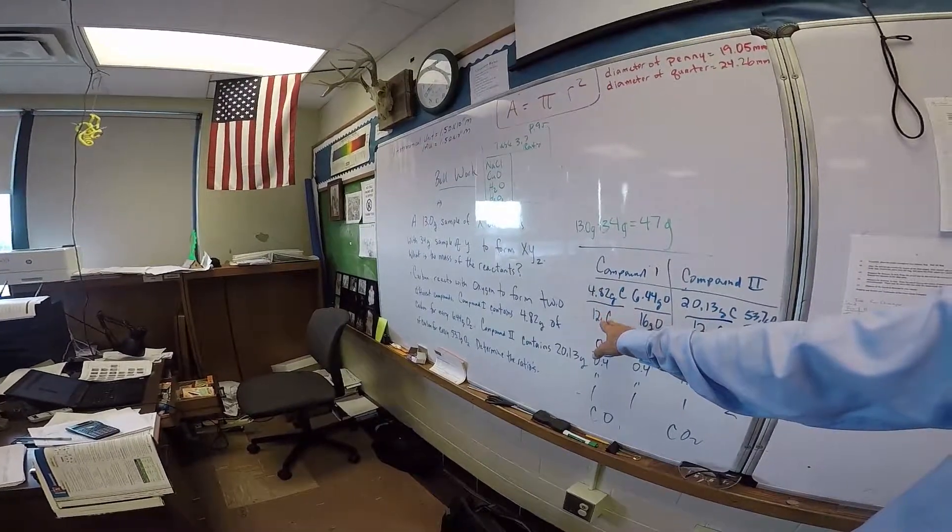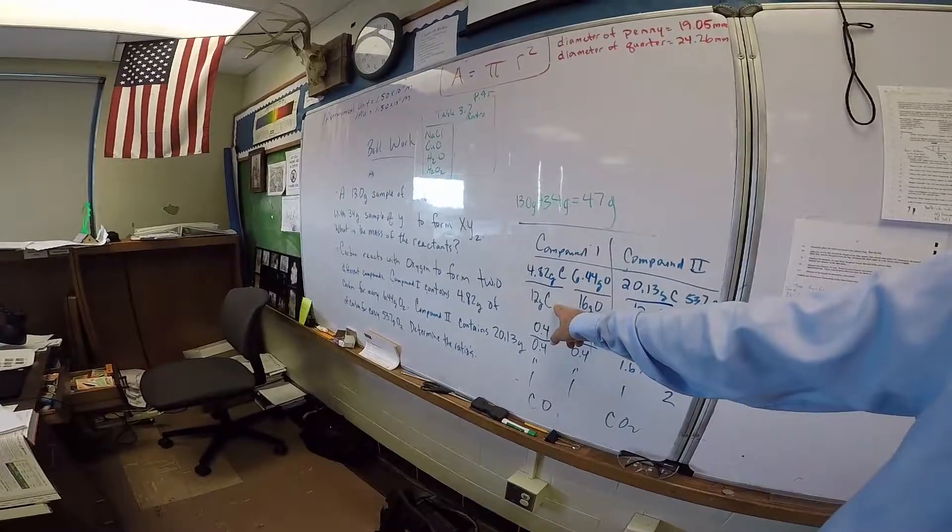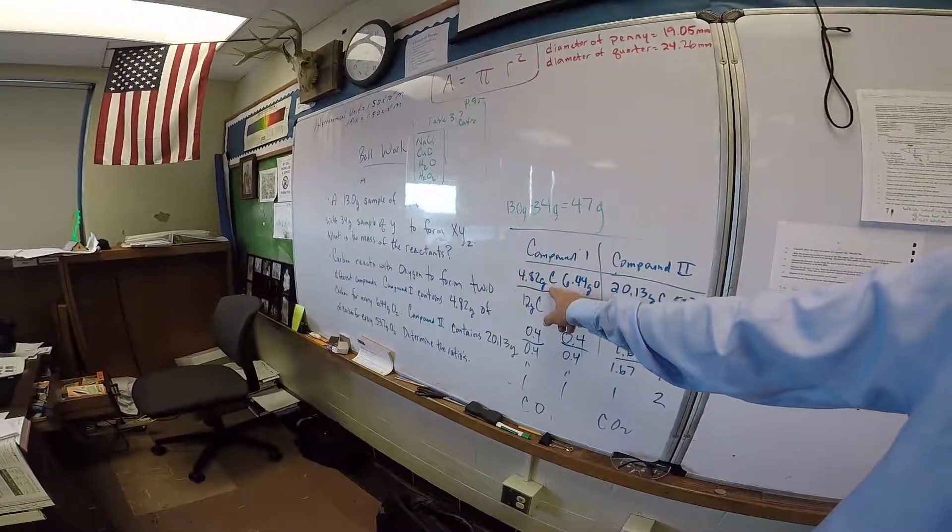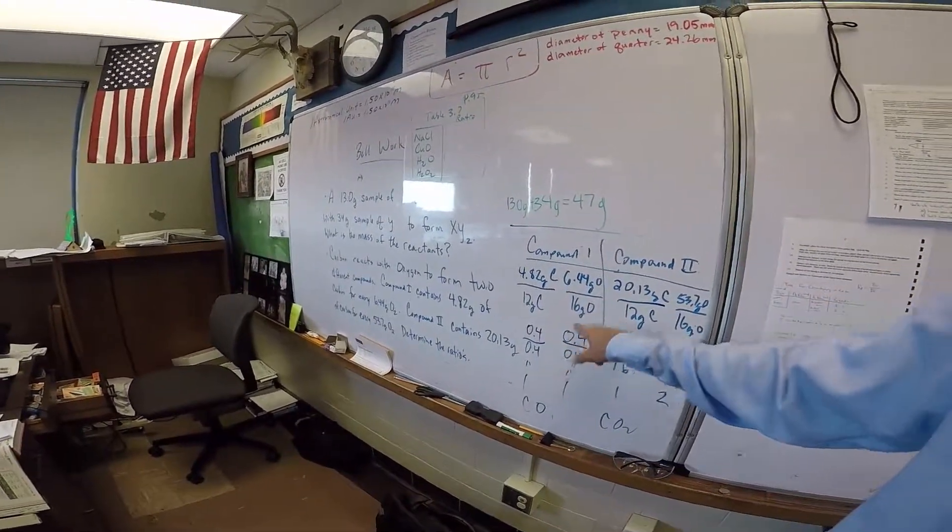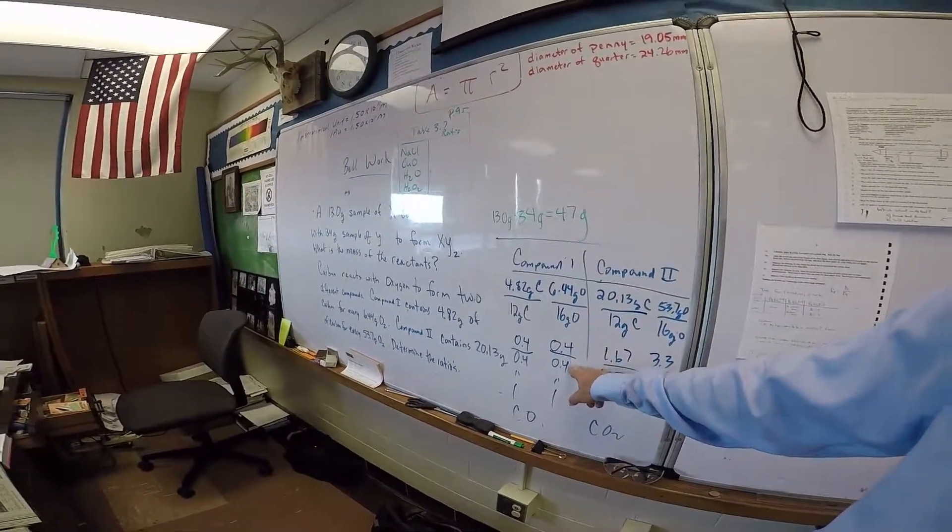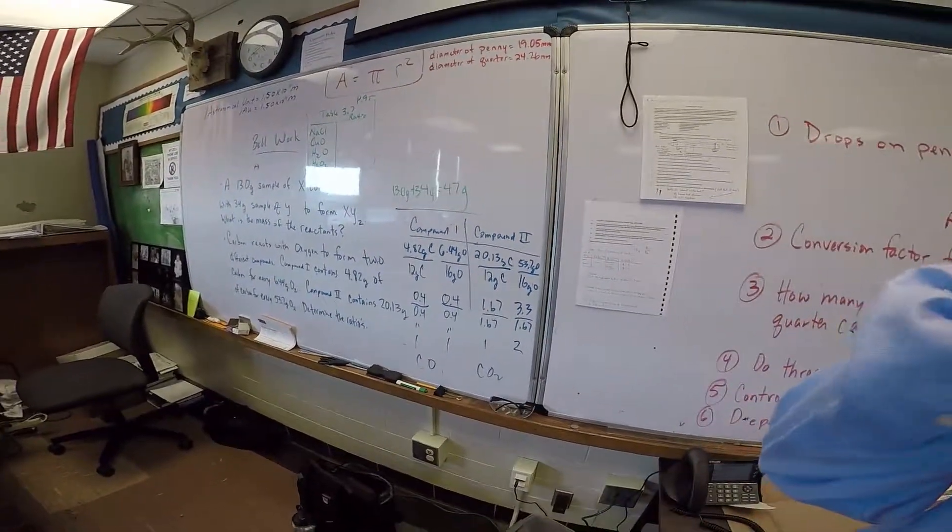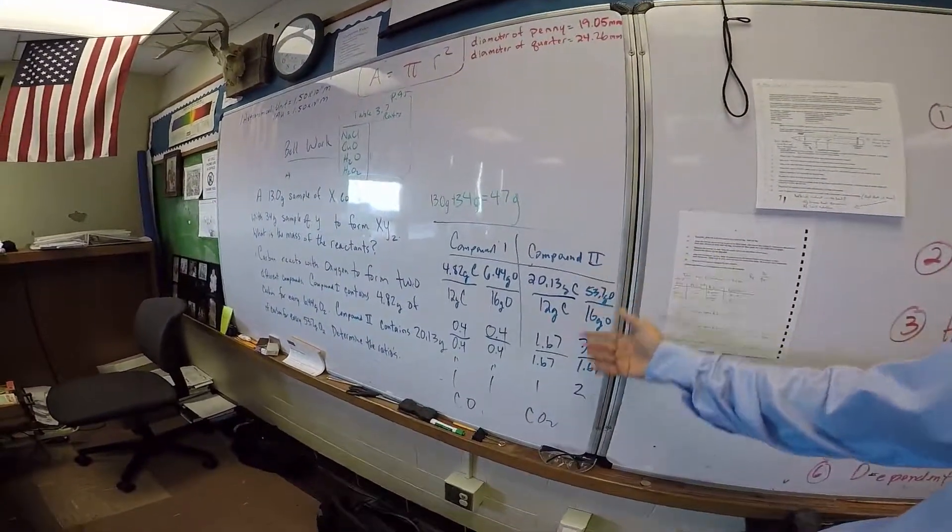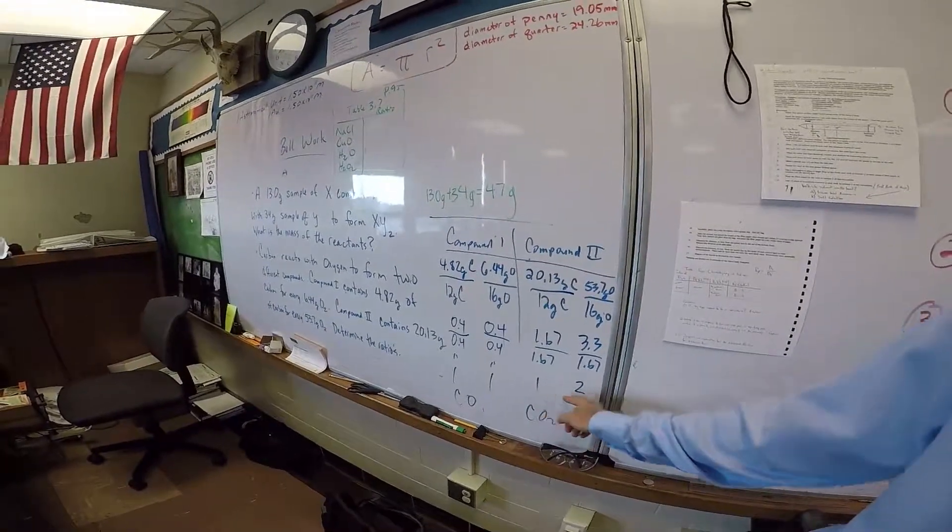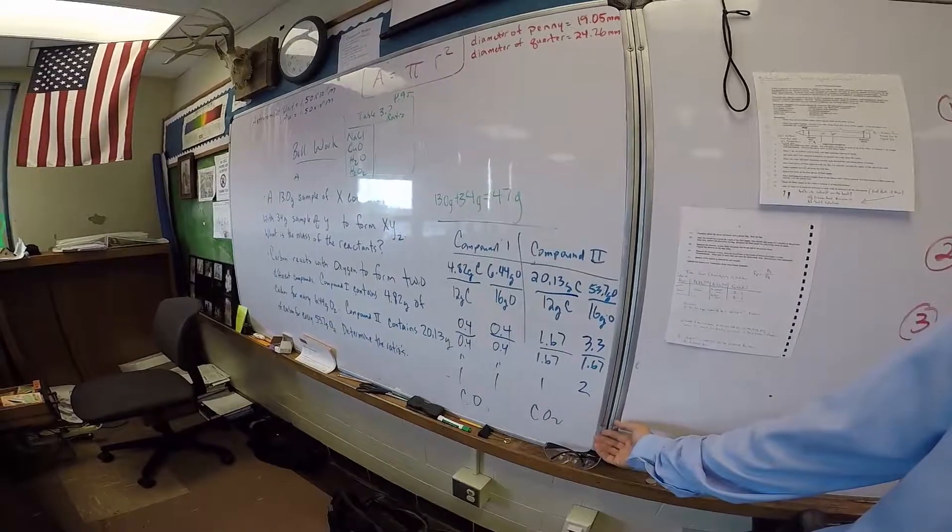And we learned that law of definite proportions says that every carbon atom is the same. And that's how we can take the mass of carbon here divided by our sample, and we get a ratio. The mass of oxygen divided by the oxygen sample, and we get a ratio. We take the smallest number divided by itself and you get one. So we do that with the second compound, and we got a one to two ratio. So both of them contain carbon to oxygen, and you can see the ratios here.